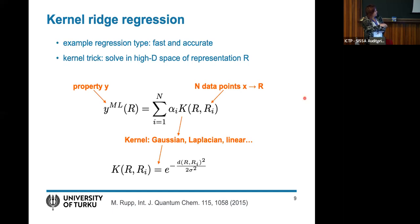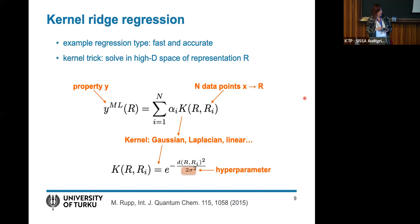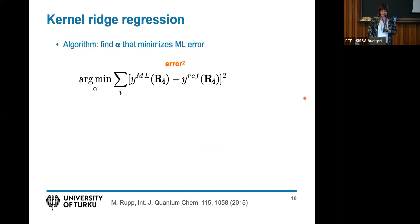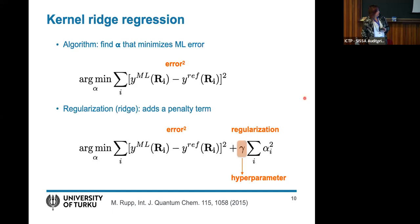You must make a choice for the kernel — there are many options in the literature. Looking at the Gaussian kernel: it's a classic Gaussian expression where the representation enters the numerator and sigma, the width of the Gaussian, enters the denominator. Once you choose the kernel, you can plug it back in, but you still need the alphas. A key hyperparameter comes from the kernel width sigma. Finding beta star is really finding the alpha that minimizes the machine learning error.